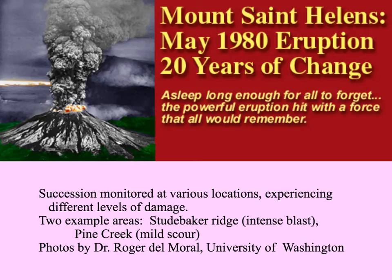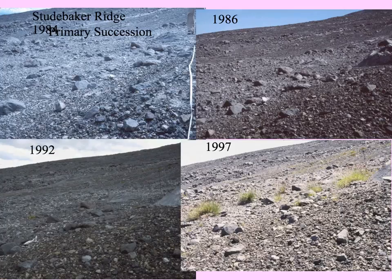In 1980, Mount St. Helens in Washington State erupted — a big surprise for everyone around there. Plant ecologist Roger Del Morale took photos to document succession in a number of different places. I'm going to show you photos from two: Studebaker Ridge, which got an intense blast, and Pine Creek, which got a mild scouring. Studebaker Ridge was in the line of the big blast, where things were taken back totally to bare rock.